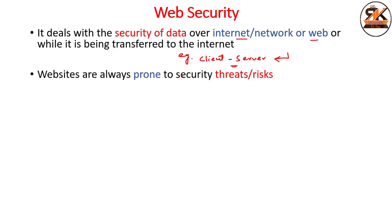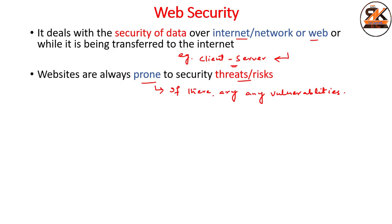Websites are always prone to security threats or risks. When many people are accessing websites, there are people who are good and people who are bad who are accessing your websites. So your websites are always prone to threats if there are any vulnerabilities. Your websites can be used for hacking assaults that install malicious software or malware on visitor computers, and this all comes under the domain of cybercrime or cyber security.